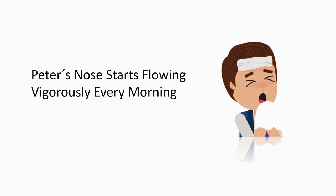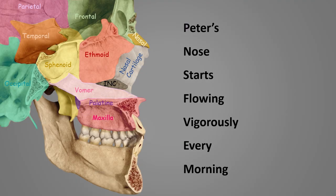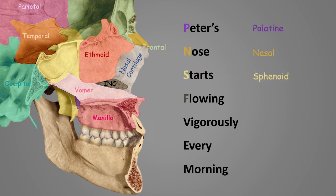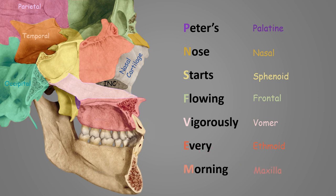our friend Max has a mnemonic for better memorization: 'Peter nose starts flowing vigorously every morning.' P stands for palatine bones, N for nasal bones, S for sphenoid bone, F for frontal bone, V for vomer, E for ethmoid, and M for maxilla. This is how you can memorize the bones involved in the formation of the nasal septum.